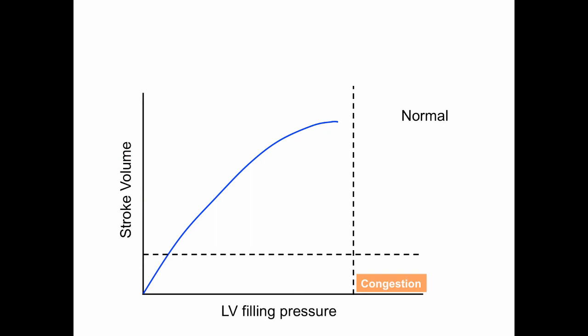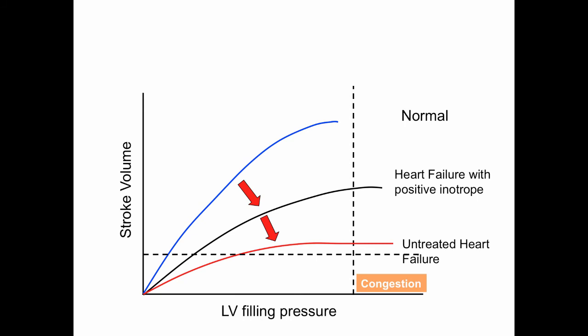To appreciate the effects of digoxin on contractility, let's look at its inotropic actions and the Frank-Starling effect. By enhancing contractility, digoxin increases cardiac output for a given end-diastolic pressure. It improves preload pressure and the efficiency of the heart, helping alleviate venous congestion and shifting the Frank-Starling curve to the left. Digoxin also reduces venous congestion — blood that's backed up and not being effectively pumped through the circulation.